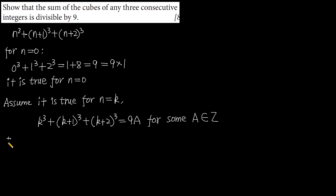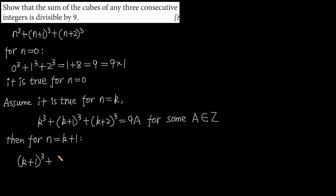Then for n equals k+1, we have (k+1)³ + (k+2)³ + (k+3)³.